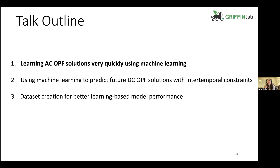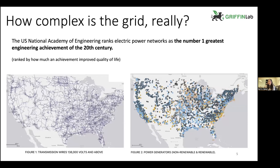So, learning ACOPF solutions — AC Optimal Power Flow. To take a step back, the power grid is, in many cases, underappreciated. The average consumer is starting to think about how outages are increasing and how the grid can't always supply power during extreme weather — the Texas freeze, for example. But the power grid has significantly improved our lives, which is why the US National Academy of Engineering ranks power as the number one greatest engineering achievement of the 20th century, based on how much it improved quality of life.